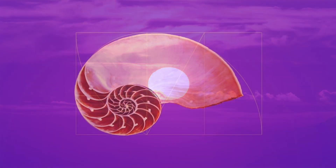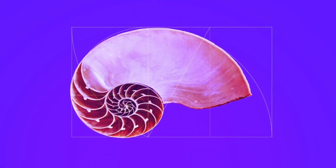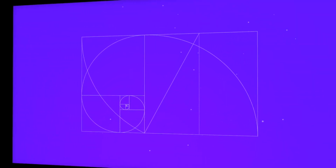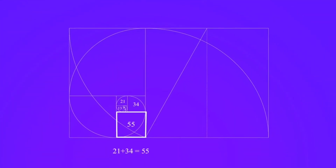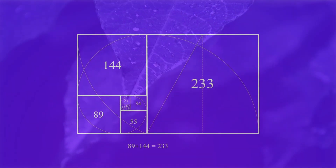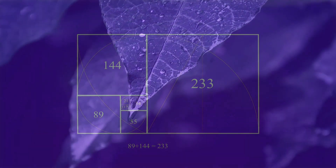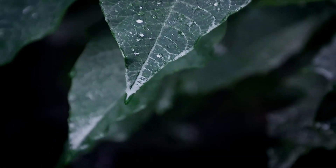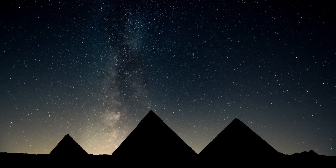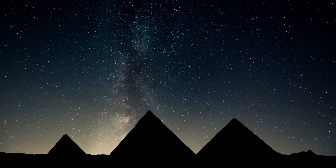Take seashells, for example. The spiral patterns on their shells follow the Fibonacci sequence, with each curve having a ratio of 1.618 to the one before it, which is known as the golden ratio. This ratio is found in many other natural phenomena as well, such as the growth patterns of plants, the shape of galaxies, and the proportions of the human body.